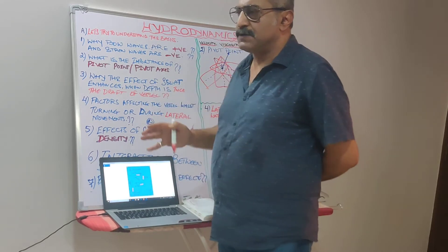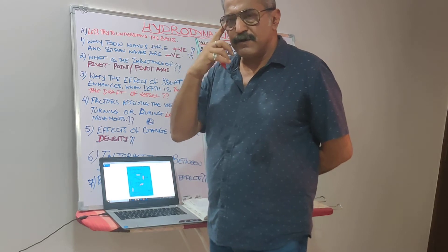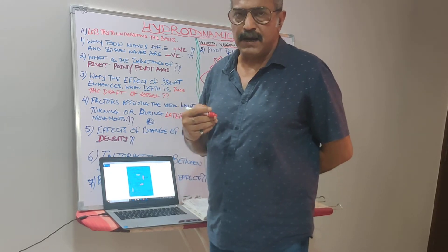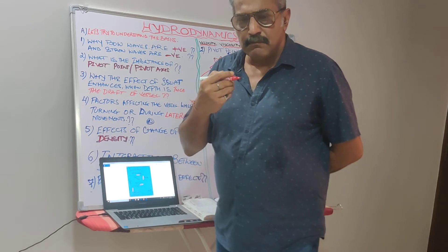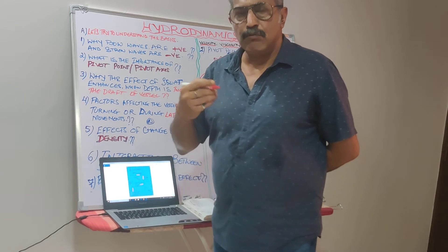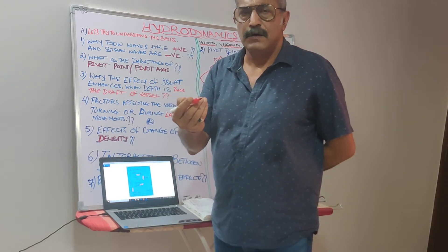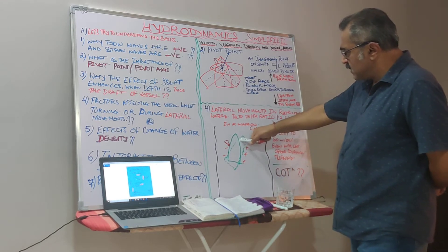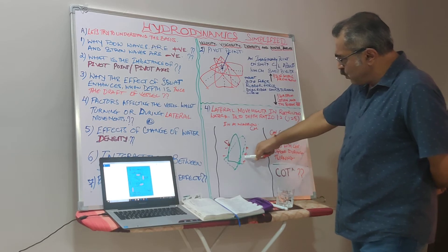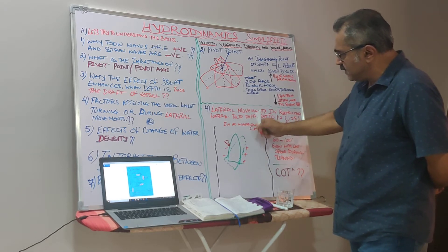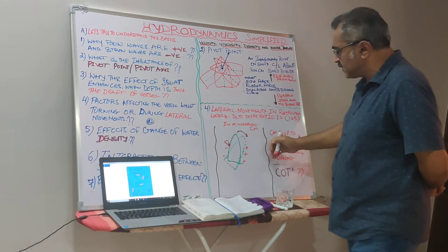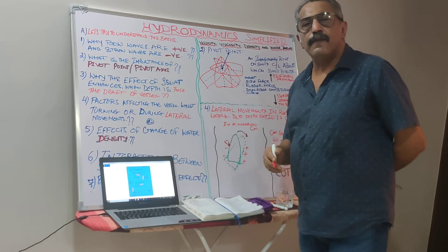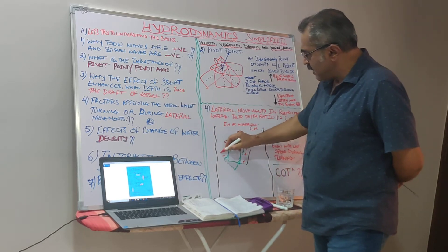This is based on my personal experience, checked many times, and I could not find this particular thing in any books written so far. When this vessel is swinging or turning to starboard, you have positive forces on the starboard side because you are going against the water pressure. The water under the hull is passing and receding on the port side — so this side becomes positive and that side becomes negative.